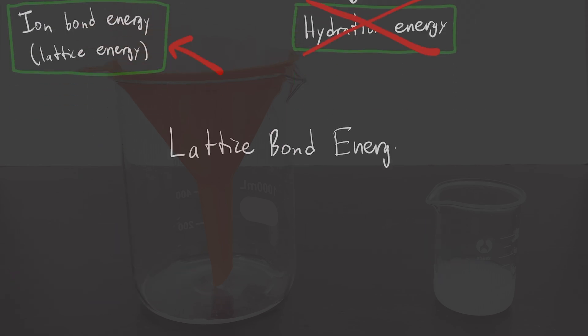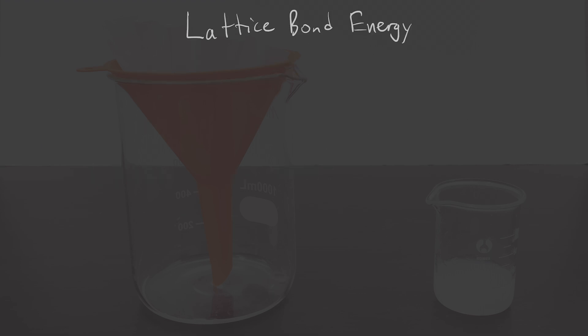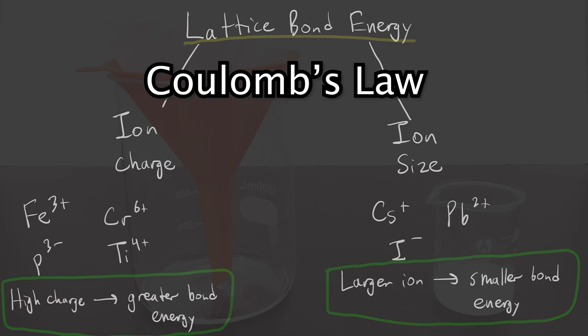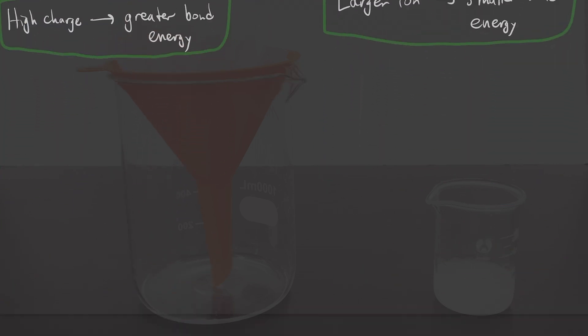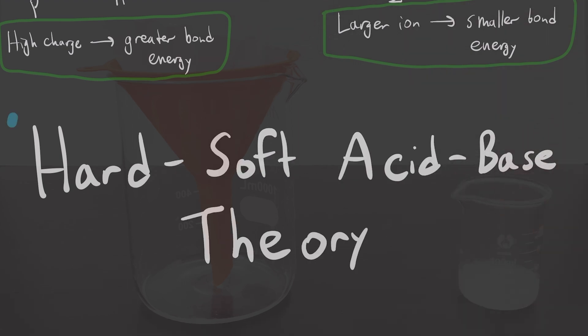So we're really answering the question, what determines the energy of the bond between two ions? Well, when it comes to dry solid crystals, bond energy is usually determined by ion charge and size. The more highly charged the ions are, the stronger the bond, and the larger the size of the ions, the weaker the bond. This is all reflected in something called Coulomb's law. When it comes to precipitates, it's pretty much the same idea, but we have a different theory to describe it. It's called hard soft acid base theory.